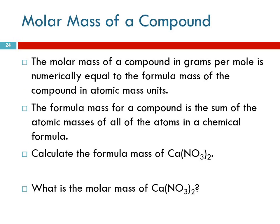The molar mass of a compound in grams per mole is numerically equal to the formula mass of the compound in atomic mass units. Just like the molar mass of an element is the same number as the atomic mass, we just change the unit, same thing for the molar mass of a compound and the formula mass. So formula mass is still relatively new because we just covered that on Tuesday. Let's calculate the formula mass of calcium nitrate.